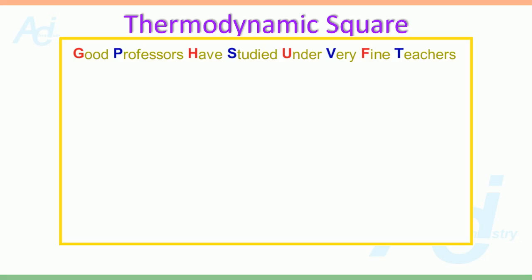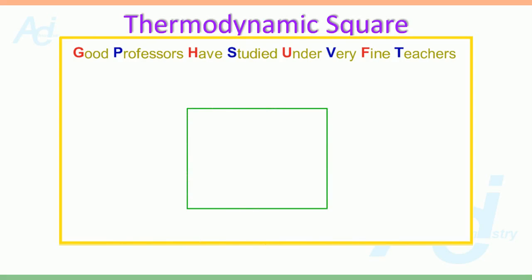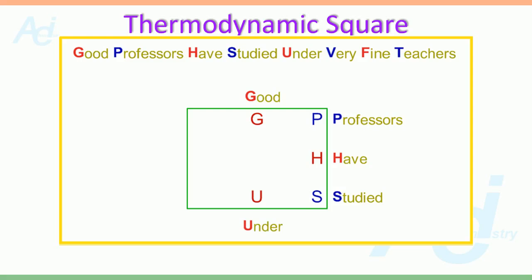I am going to arrange these terms along a square in the clockwise direction starting at the 12 o'clock position. G is placed at the 12 o'clock position, then moving to the right side, P is written on the top right corner, H on the middle of the right side, then S on the bottom right corner, U at the middle of the bottom side, then V, then F, and finally T. This makes our thermodynamic square.